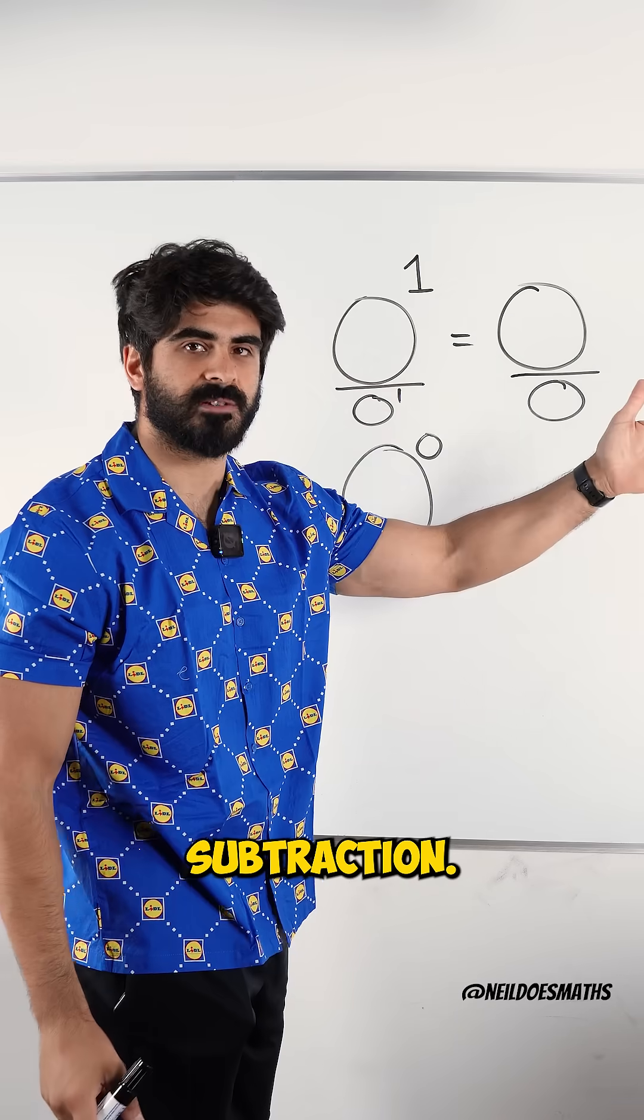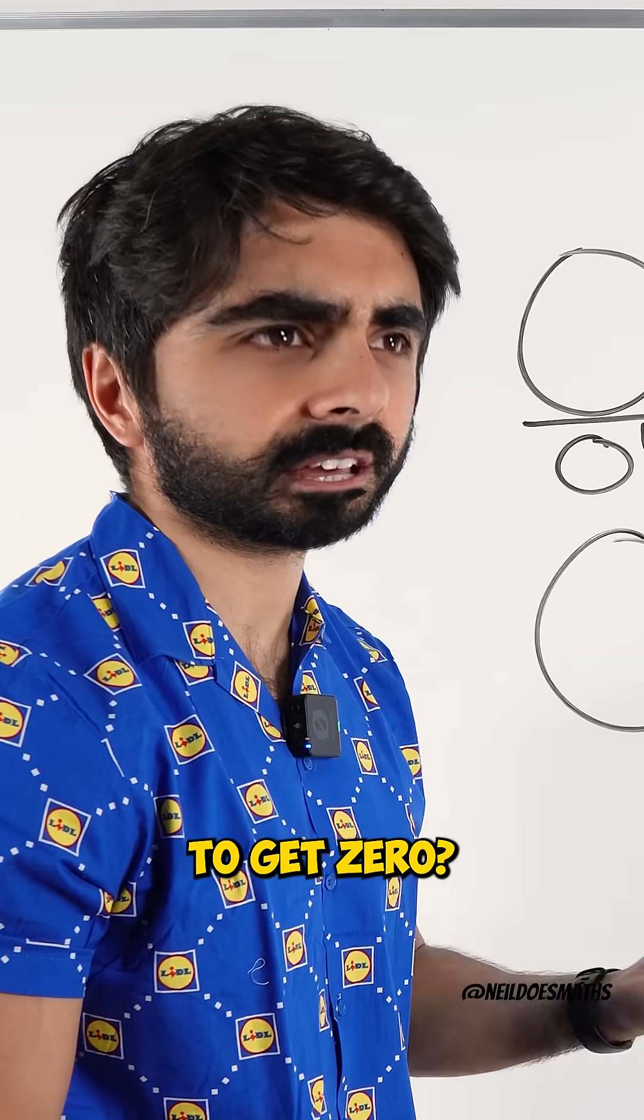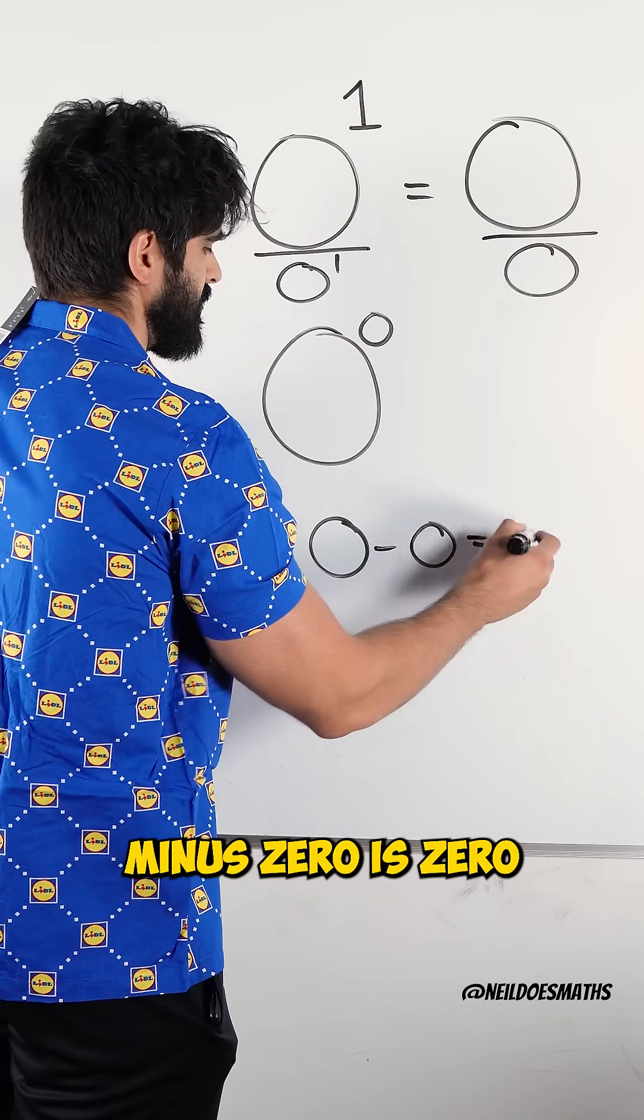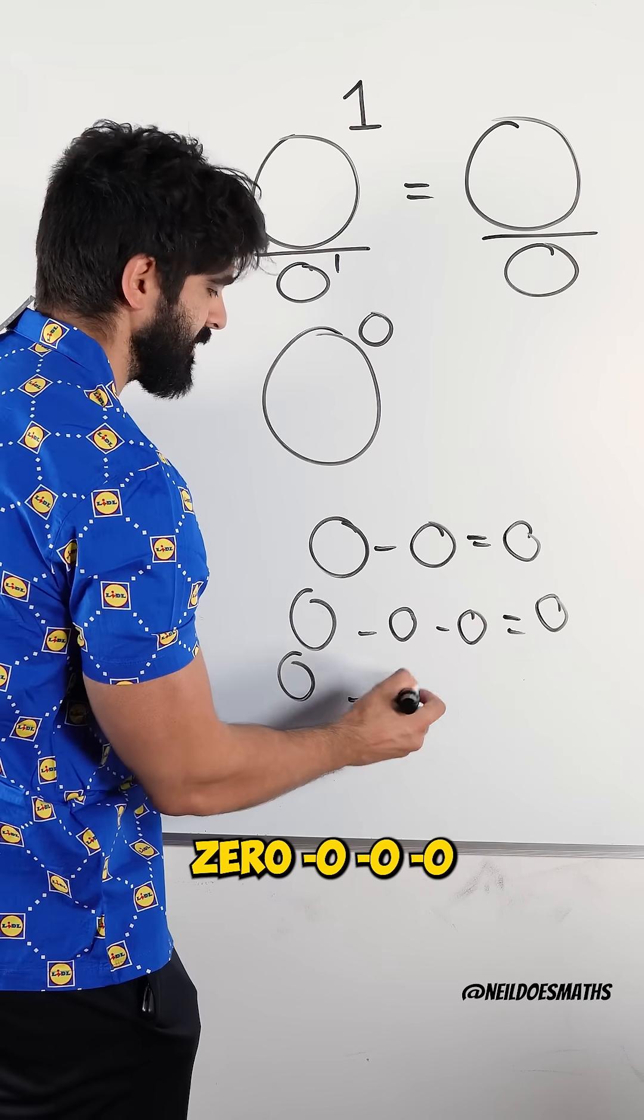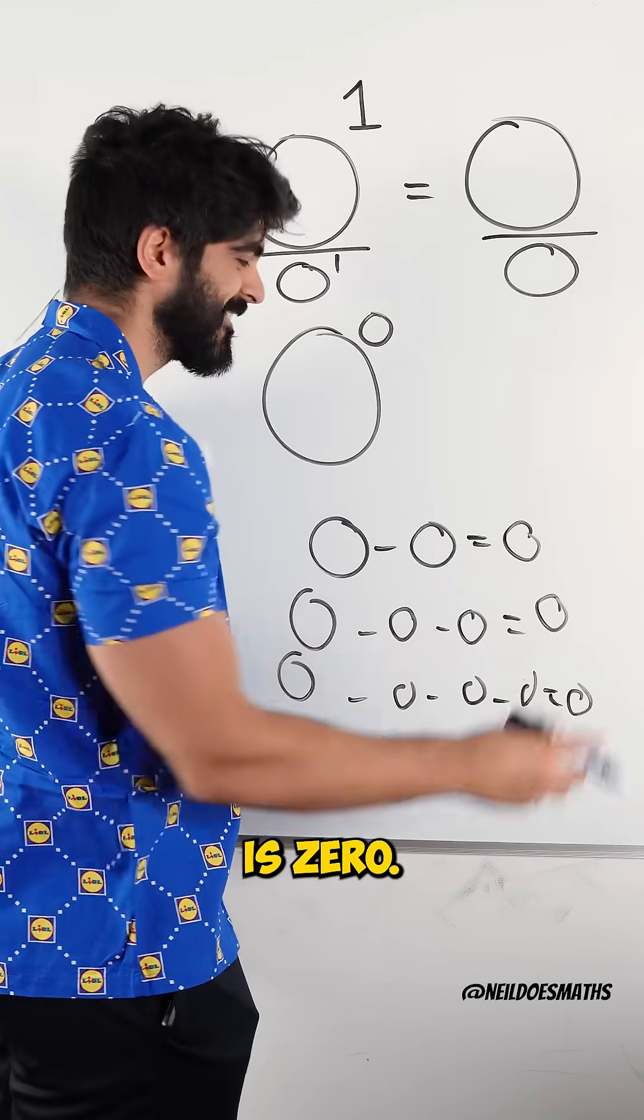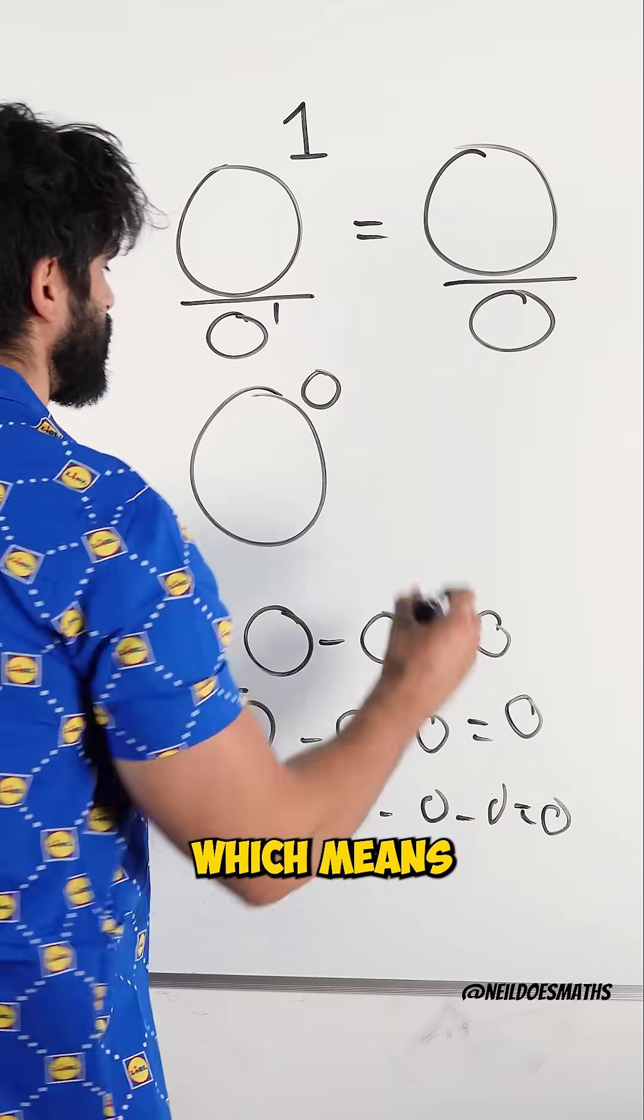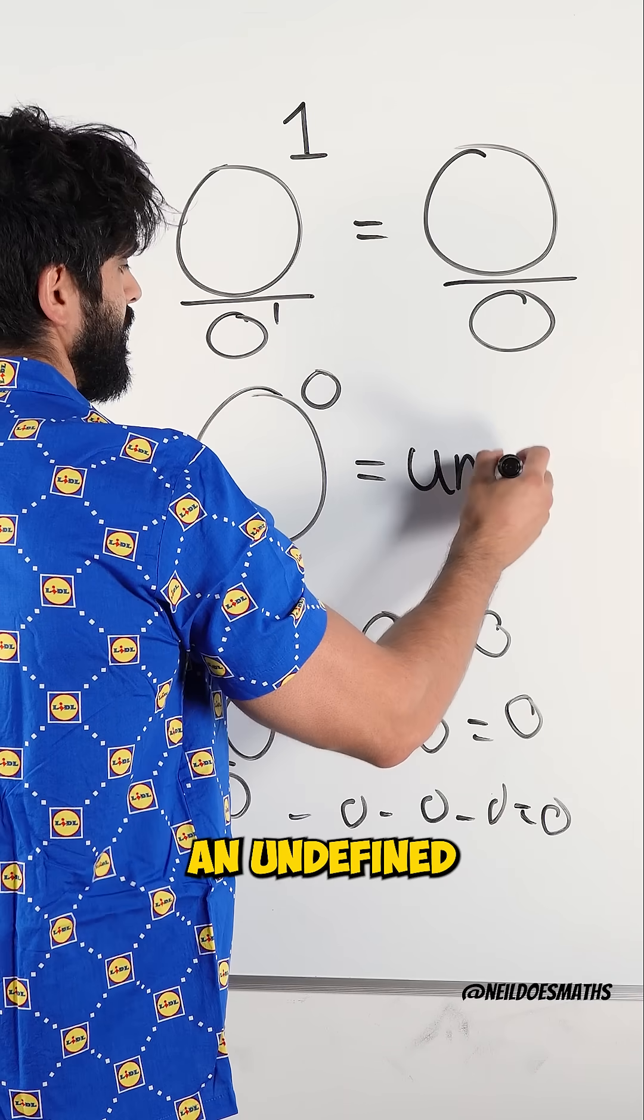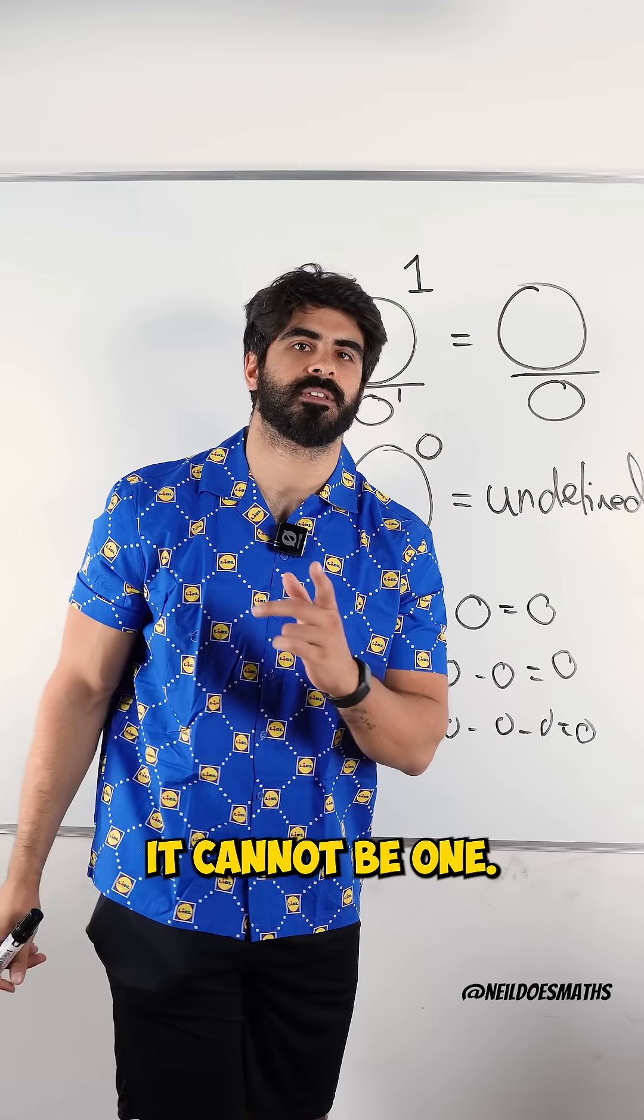Well, division just means repeated subtraction. This is saying, how many zeros do you need to subtract from zero to get zero? Zero minus zero is zero. Zero minus zero minus zero is zero. Zero minus zero minus zero minus zero is zero. Is it one? Is it two? Is it four? There's no definitive answer, which means this is an undefined statement and therefore it cannot be one.